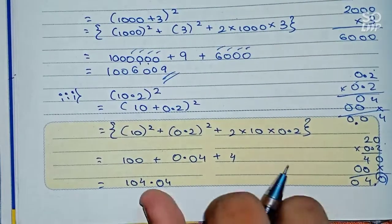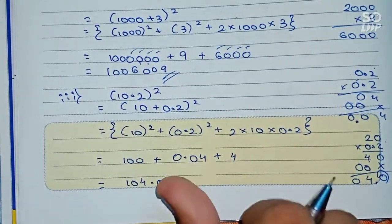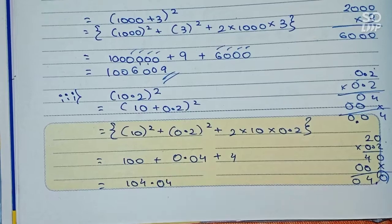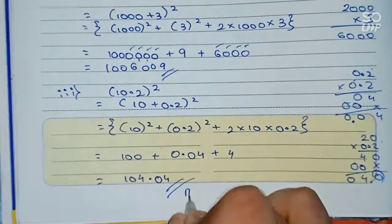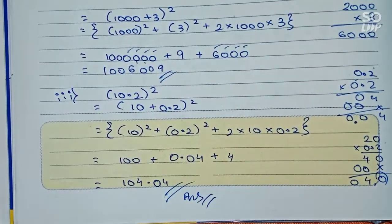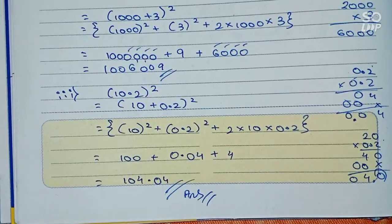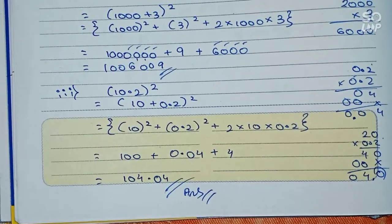Look at the decimal point carefully — it is 0.04, not 0.4. So the final answer is 104.04. Thanks for watching this video, and please subscribe to my channel for more solutions.